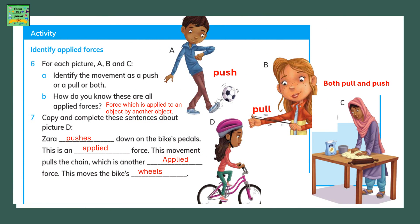Activity: Identify applied forces. For each picture A, B, and C, identify the movement as a push, a pull, or both. In A, the boy is pushing the ball. In B, the girl is pulling the string. In C, the woman is both pulling and pushing the door. How do we know these are all applied forces? The force is applied to an object by another object — in all these examples, two objects are involved: a person and another object.